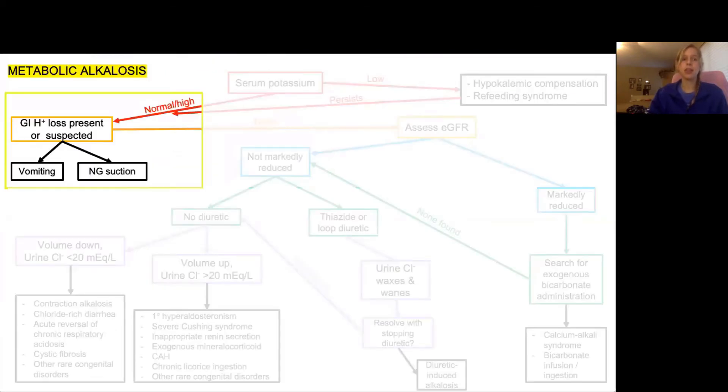So now let's talk about the next step. We already talked about hypokalemia. The next thing to evaluate for is GI loss of acid, and this can come from either vomiting or from excess NG suction.